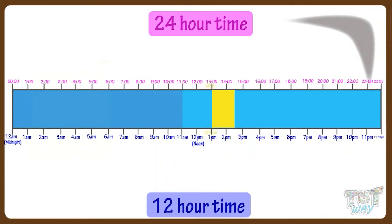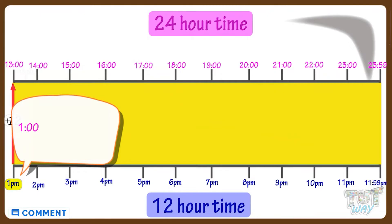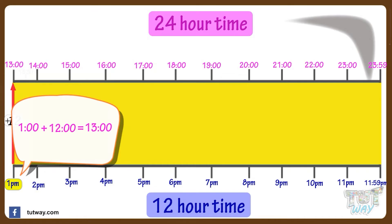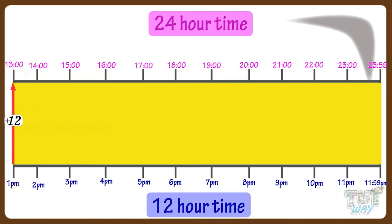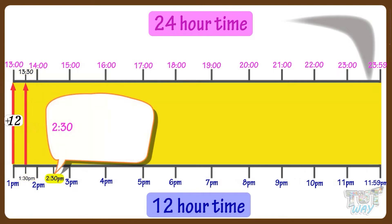Between the time 1 p.m. and 11:59 p.m., you have to add 12 hours to convert from the 12-hour clock system to the 24-hour clock system. For example, if it's 1 p.m., add 12 and you get 13 — so it is 13 o'clock. If it's 1:30 p.m., add 12 and you get 13:30. If it's 2:30 p.m., add 12 and you get 14:30 in the 24-hour clock system.